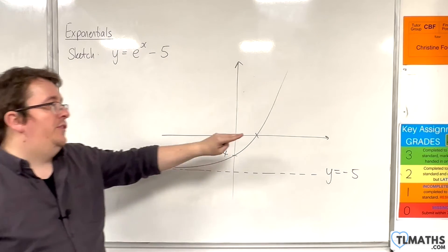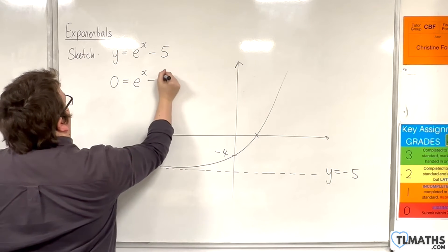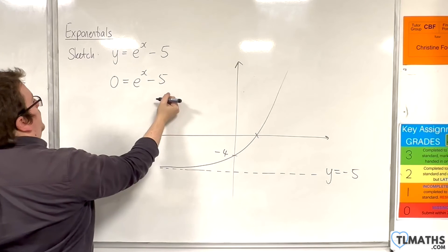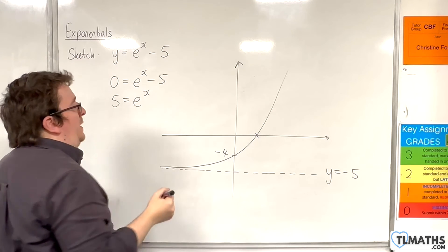And where it crosses the x-axis is when y is 0. So we have this. If we add 5 to both sides, we get e to the x must be equal to 5.